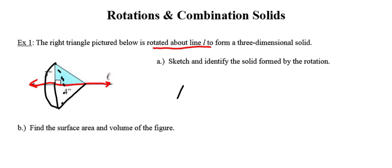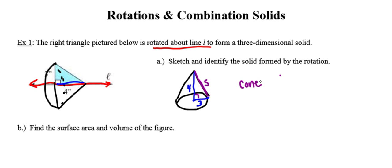You can go ahead and sketch that cone. It's going to have a height of four and a radius of three at its circular base. If you know your Pythagorean triples, you know that the slant height is going to be five. So identifying it: it's a cone with those given dimensions.